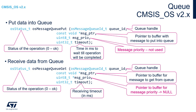To receive data from the queue, use the dedicated function osMessageQueueGet. The return value is the same osStatus_t type. It requires four arguments: the queue handle, a pointer to the buffer for the received message, the message priority (unused, should be null), and the receiving timeout given in milliseconds.